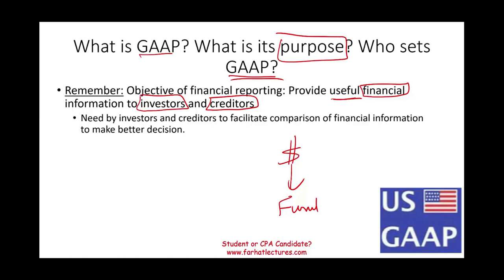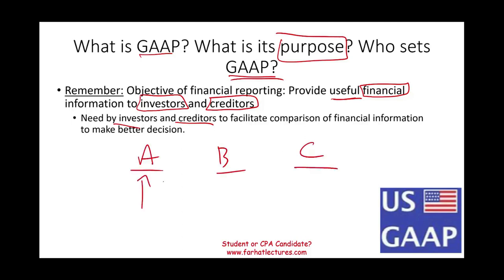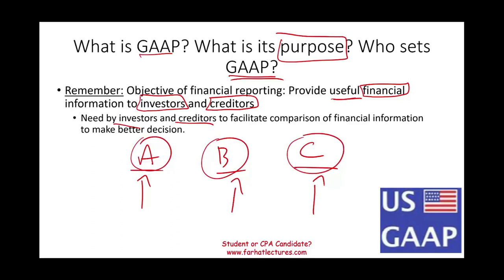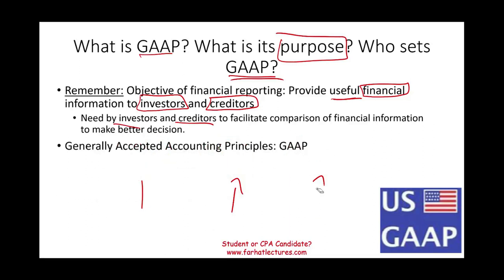These two groups, investors and creditors, need information to make decisions. Before you lend money or invest in a company, you want to know how that company is doing. Often you'll have many options — companies A, B, C, D — asking you to lend them money or invest in them. If all these companies are presenting their financial information in a comparable way, then you can compare A to B to C and make the proper decision.